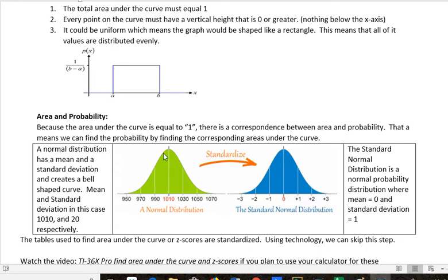Because the area under the curve, totally under here, this green area here, would be equal to one, that's 100% as a probability. If we say what percent of this is green, all the green, there's 100% there. So we can find the probability by finding the corresponding areas under the curve.